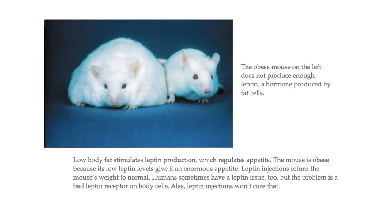This overweight mouse has low leptin levels, and because of that, it has an enormous appetite. When a scientist injects the mouse with leptin, the mouse's body is now able to create more of a balance, controlling the appetite and helping with fat storage, bringing the mouse's weight back to normal.